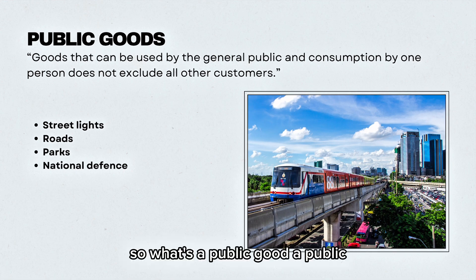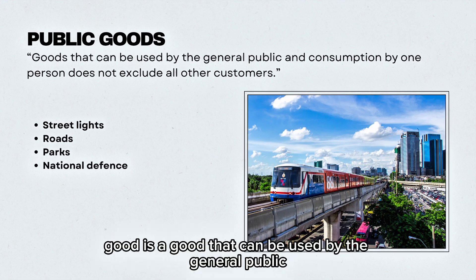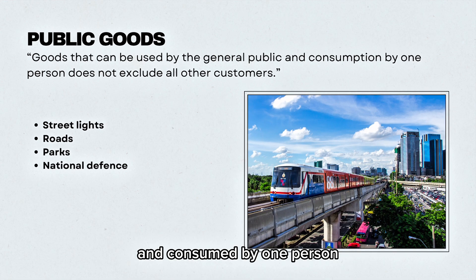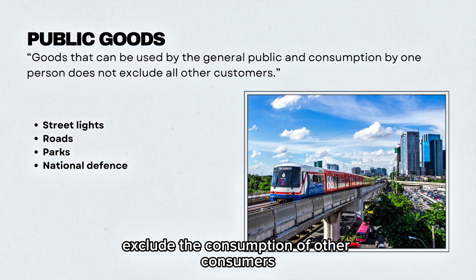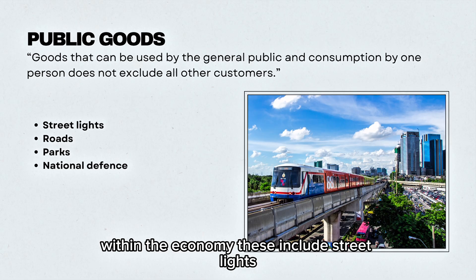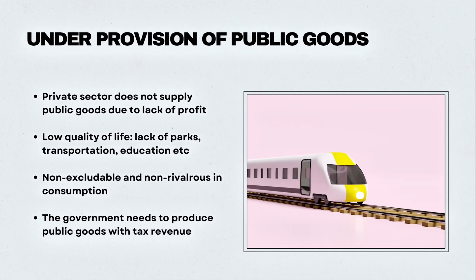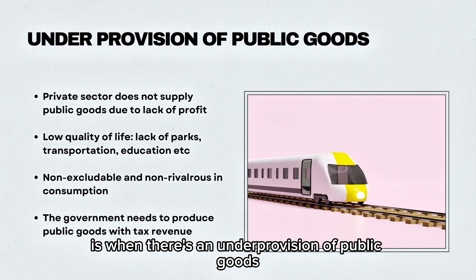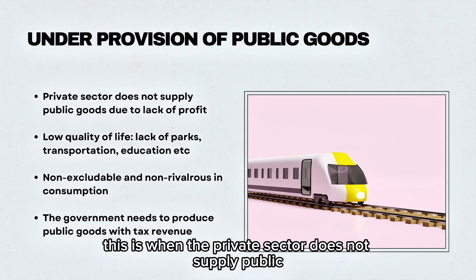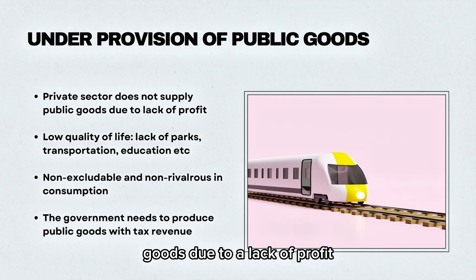A public good is a good that can be used by the general public, consumed by one person, and does not exclude the consumption of other consumers within the economy. These include street lights, roads, parks, and national defence. Market failure occurs when there is an under provision of public goods — when the private sector does not supply public goods due to a lack of profit.